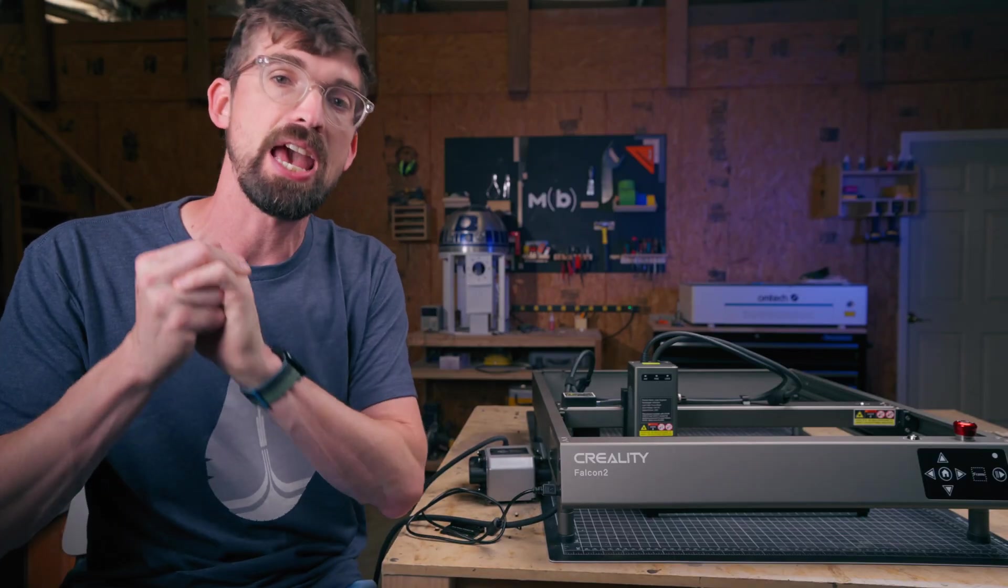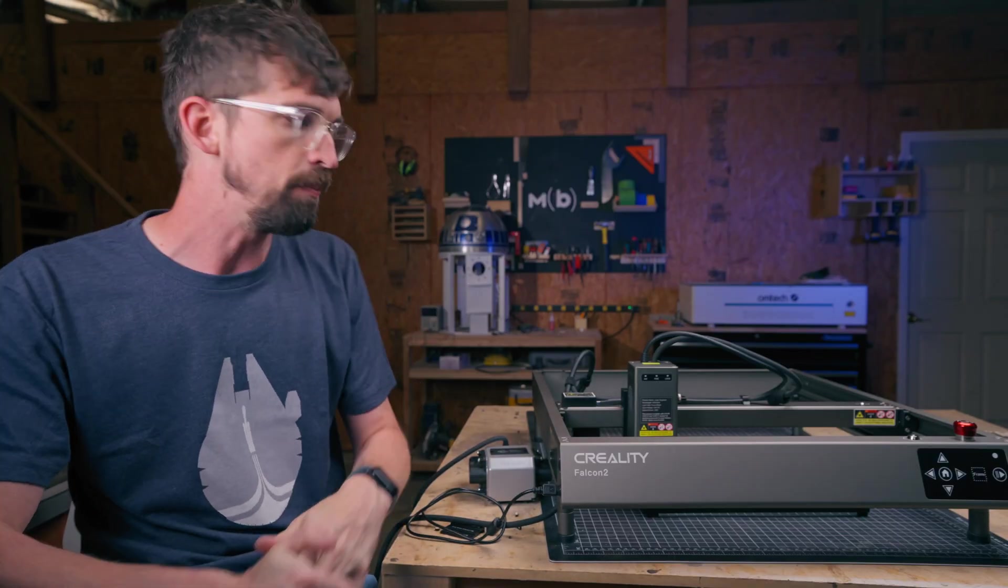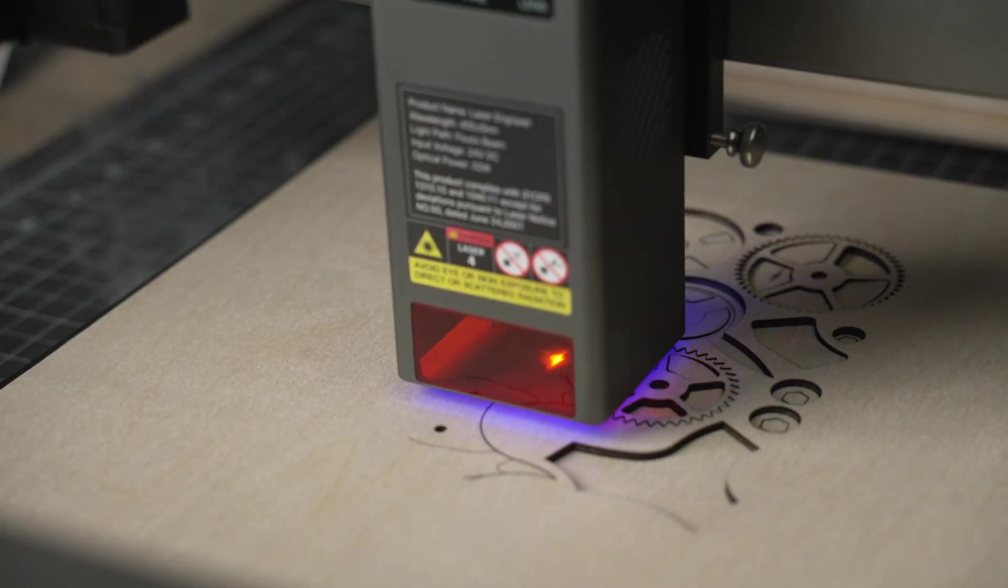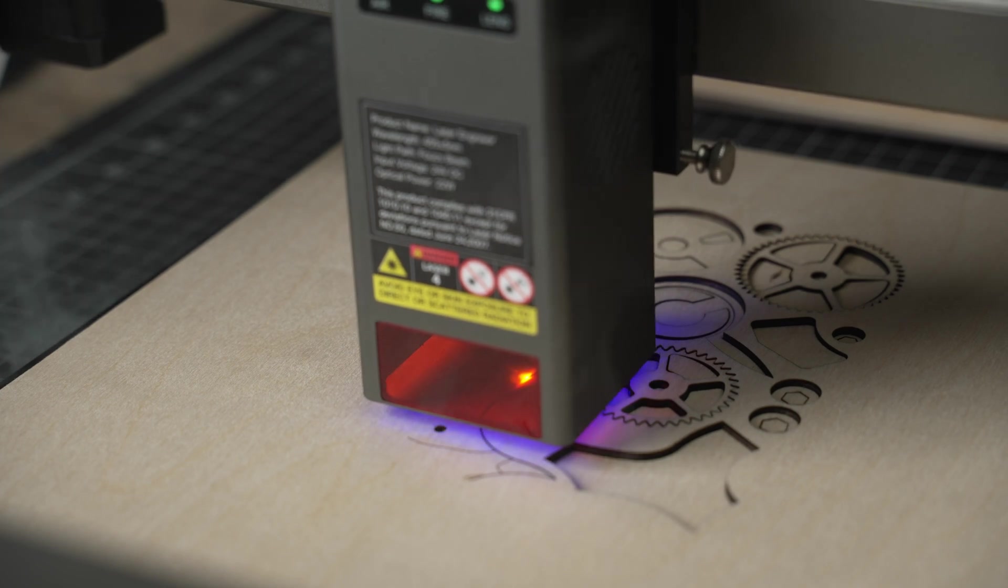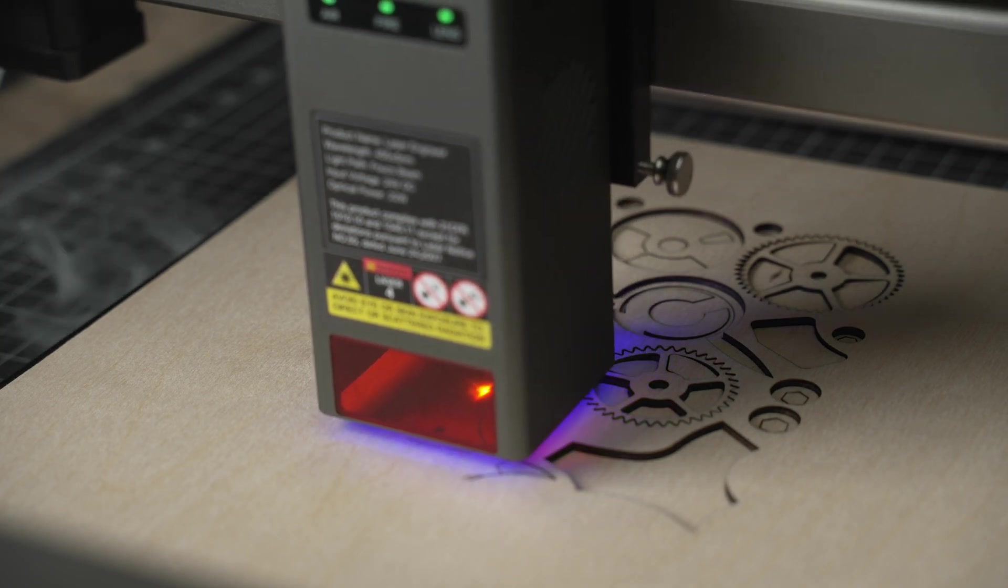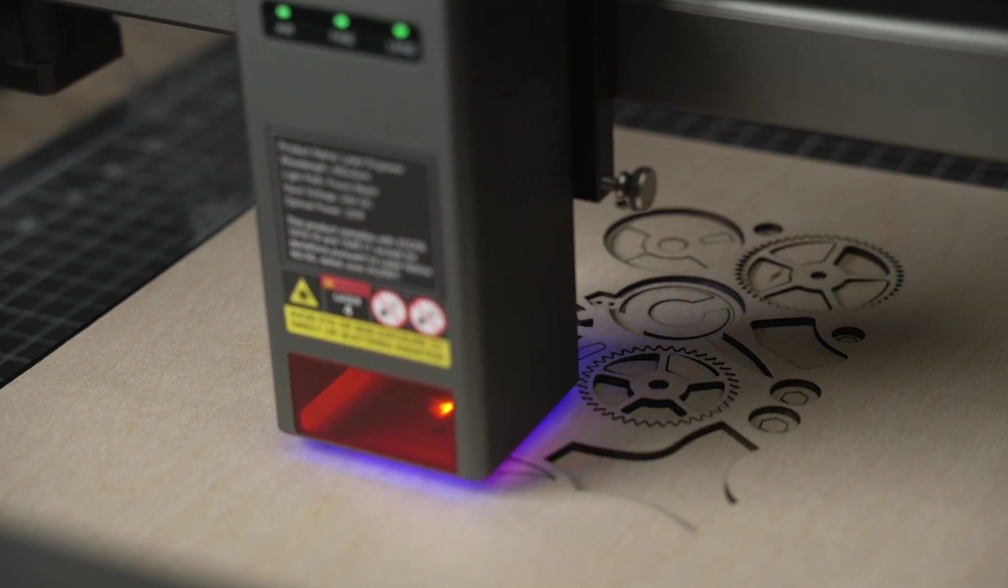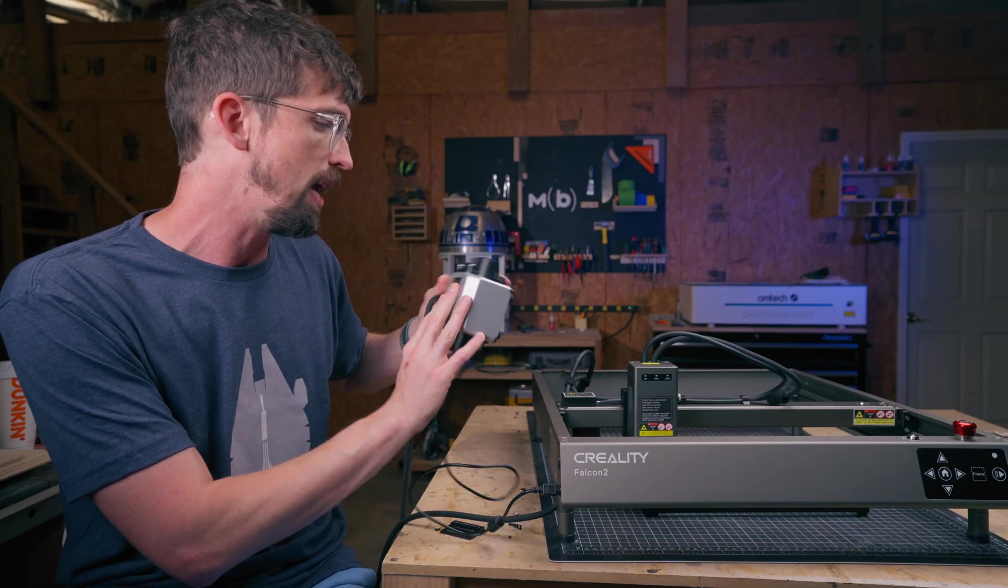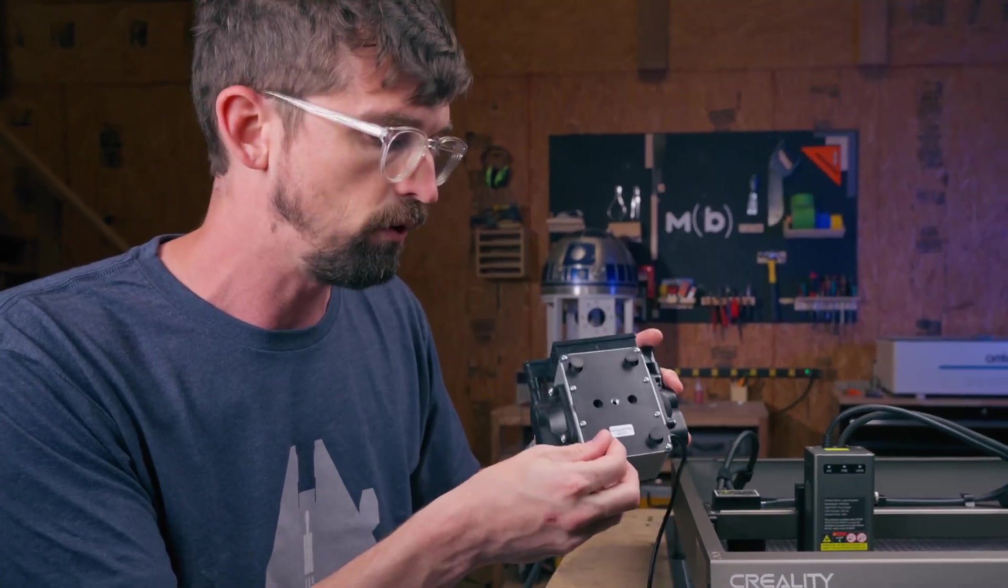Now probably the biggest thing that I have complained about over the years is when you get to these higher laser powers, you need some type of air assist. Not only is that a safety feature, so that's helping put out the flames that might be popping up, but it also gives you a cleaner cut because it's getting the dust and soot and debris away. This is great because they do provide you a compressor right here and even though it's really small, it's super helpful.